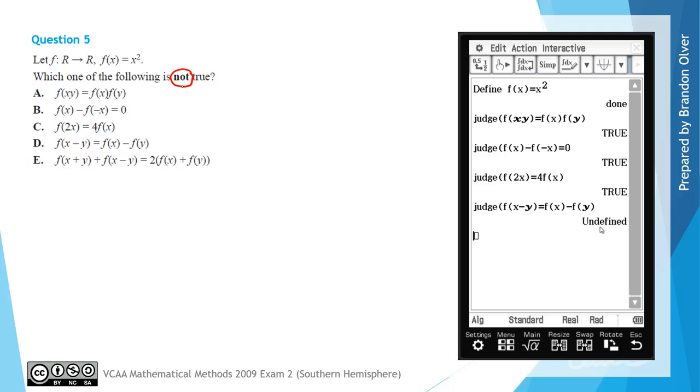While I've got the calculator up, I'll just show that E is also true. Dragging down judge, we want to put in f of x plus y in the first one, and then we add on to that f of x take y, and then we test if that is equal to 2 times in brackets f of x plus f of y. If I drag that down and replace that negative with a positive, that's now option E entered in, and hitting execute, that says that it's true as well.